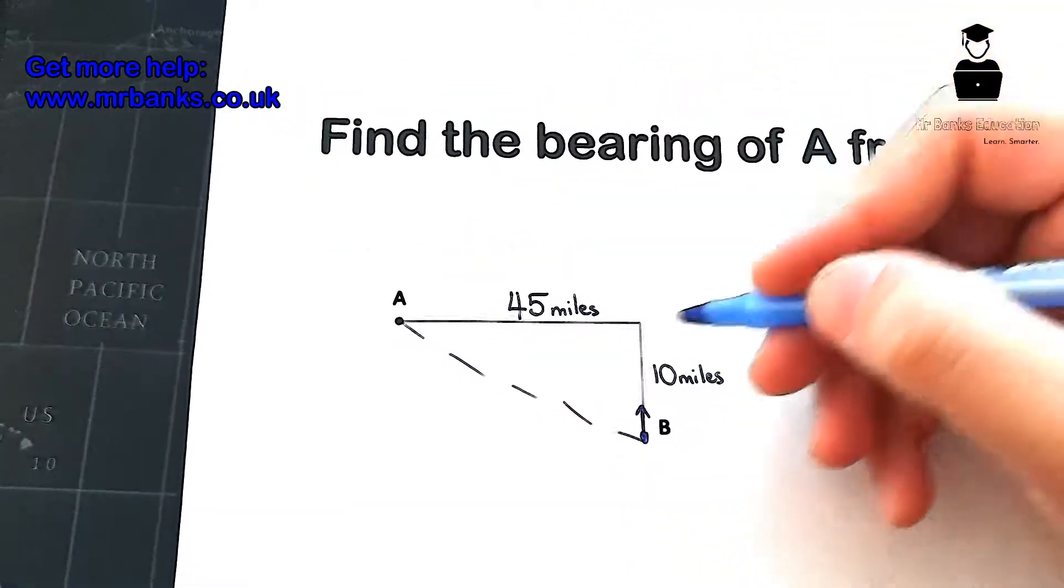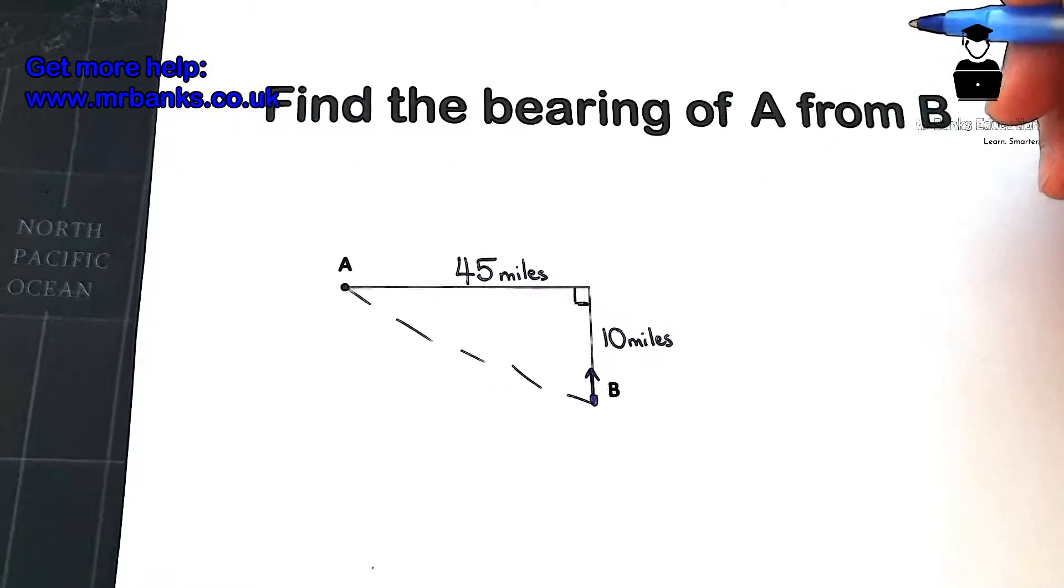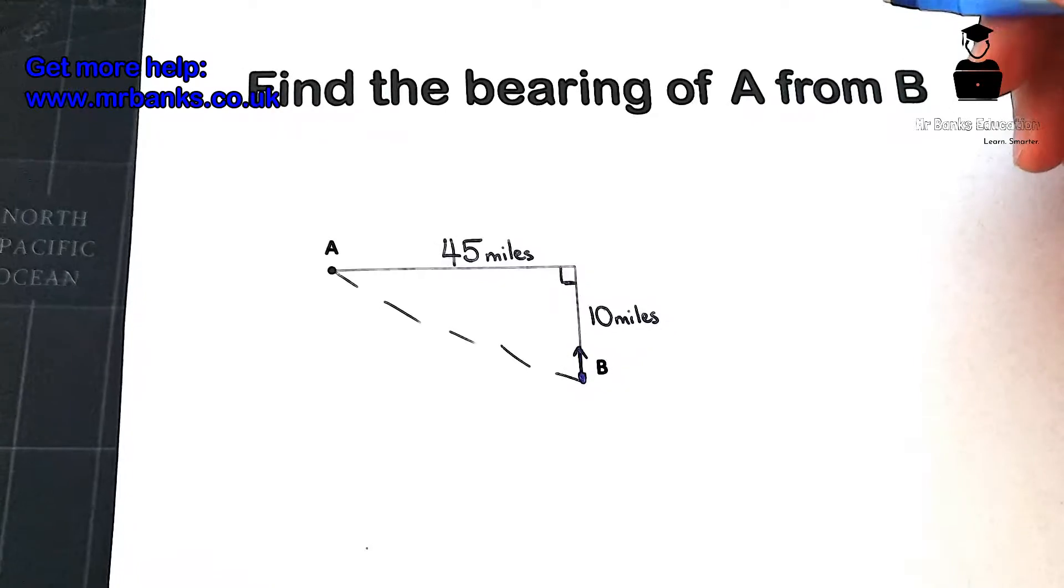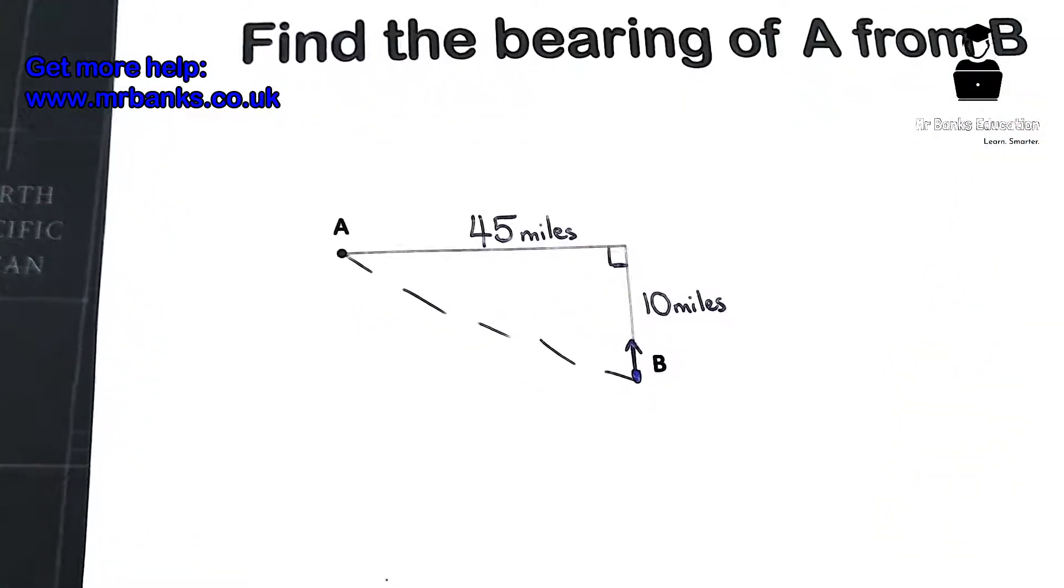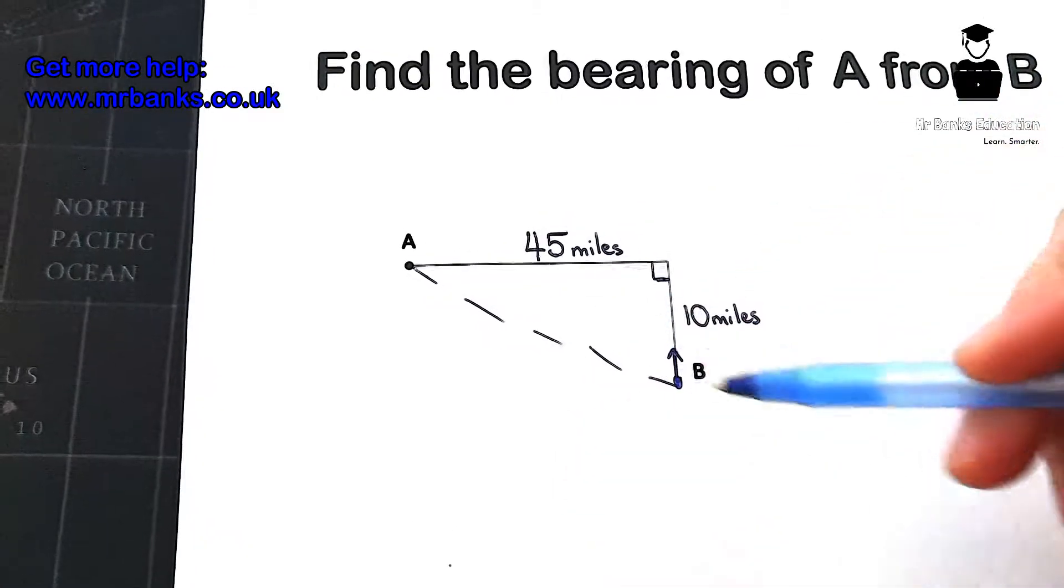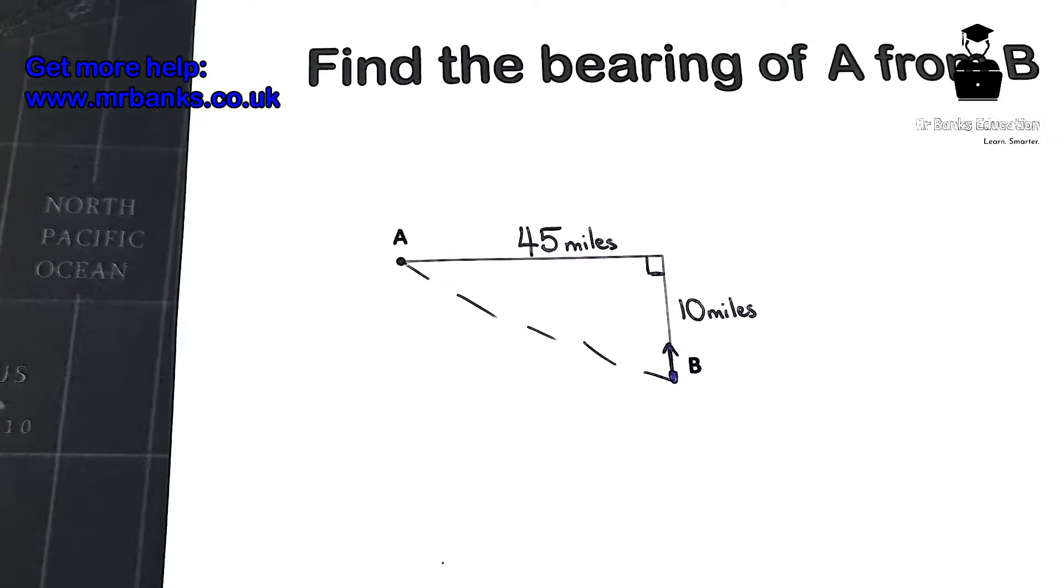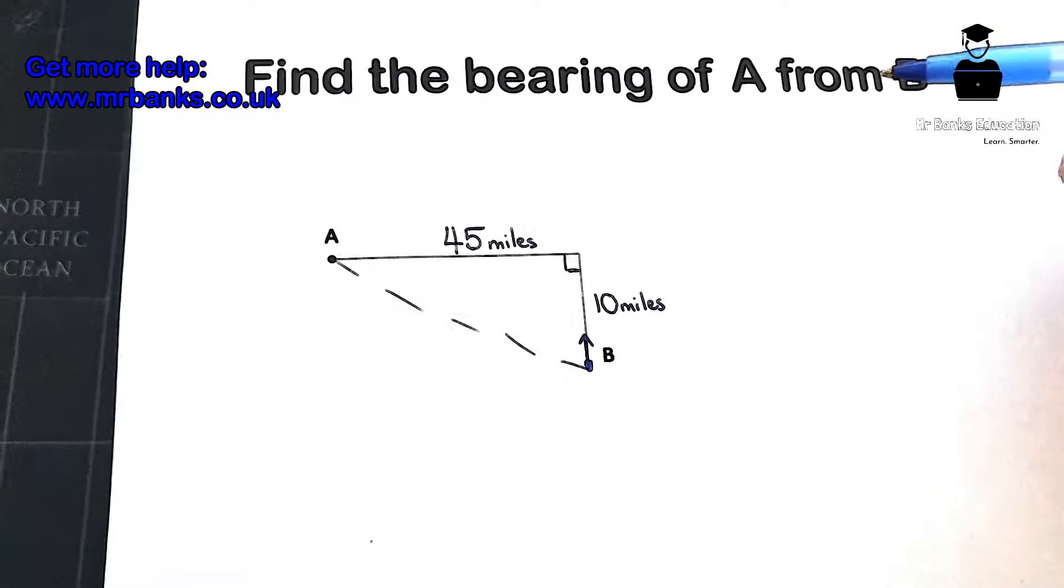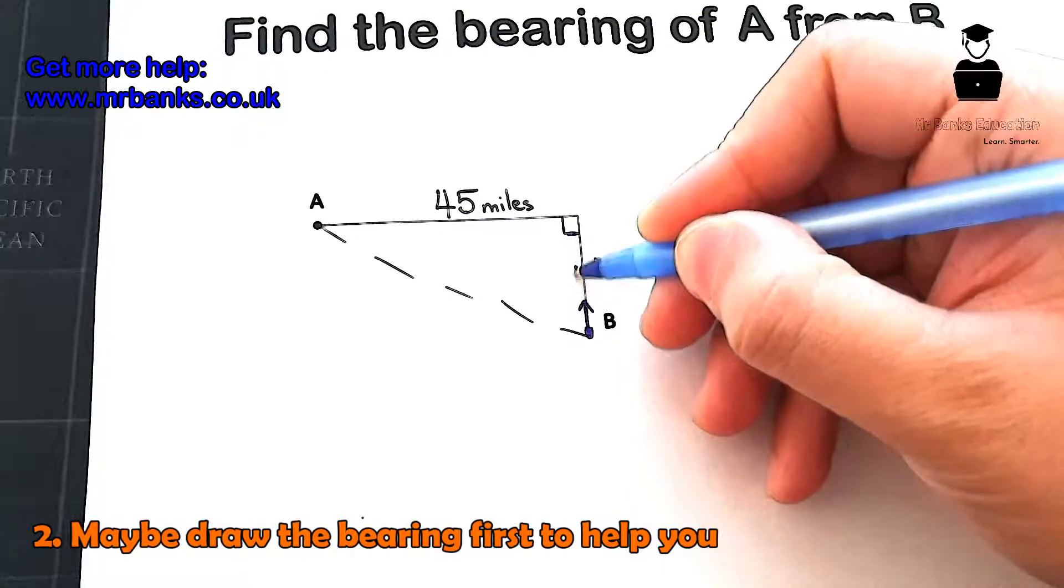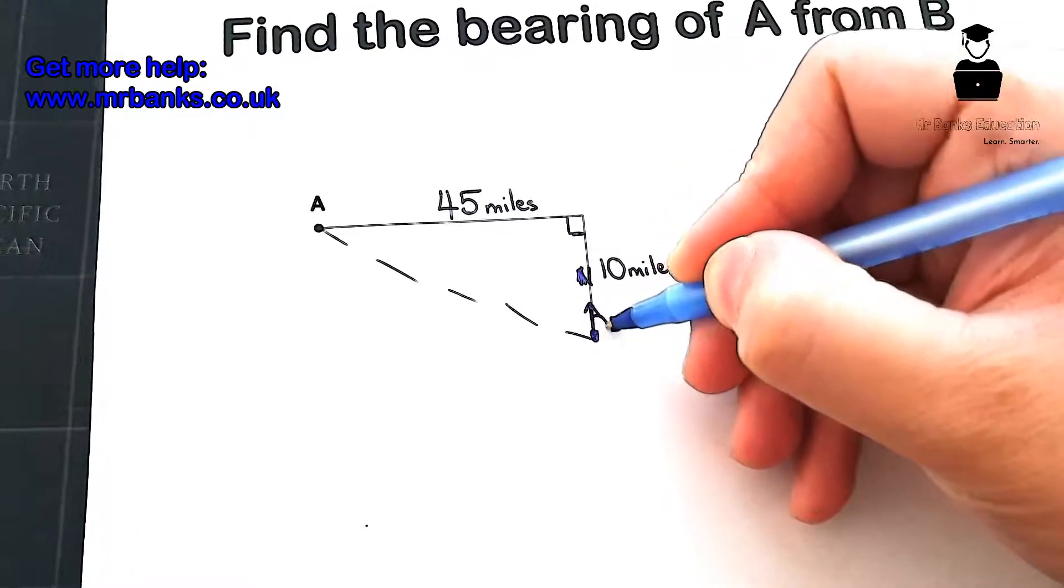So here's your right angle triangle. Now what we can do is apply some basic trigonometry to figure out what angles are missing. In order for us to work out the bearing, we need to figure out exactly what is the bearing. So this is our north, we always start from the north, and this is the bearing here.